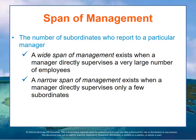A wide span of management exists when a manager directly supervises a large number of employees — maybe 10, 15, even as many as 20, in some cases more. A narrow span of management exists when a manager directly supervises only a few — three, four, five. You can see the difference between having a whole bunch of different things to watch out for versus being focused on a few that are of particular relevance, generally dealing with more complex interactions between the manager and the subordinates.